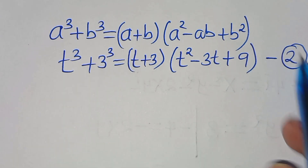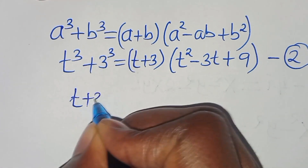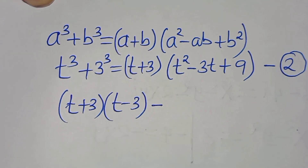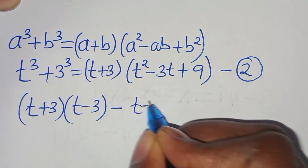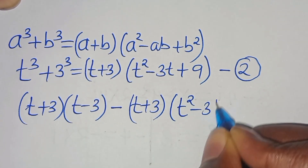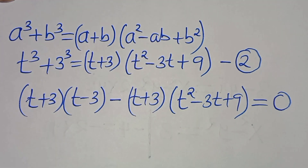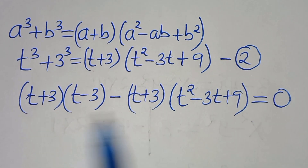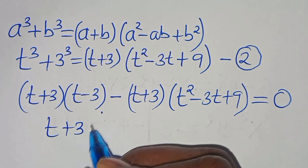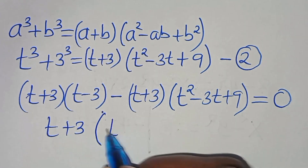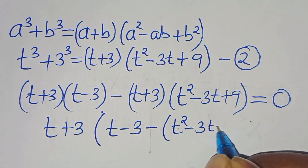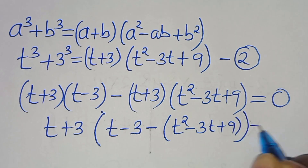Now let's combine equation 1 and equation 2. Equation 1 is (t plus 3)(t minus 3), subtract equation 2, which is (t plus 3)(t squared minus 3t plus 9), this is equal to 0. We find that (t plus 3) is common, so we can factor out (t plus 3), giving us (t plus 3) times (t minus 3) minus (t squared minus 3t plus 9), this is equal to 0.